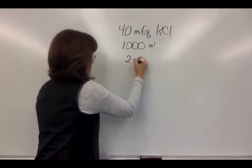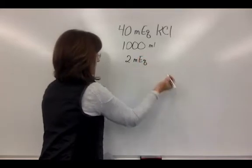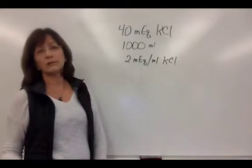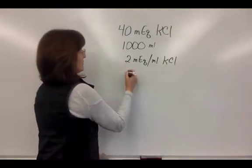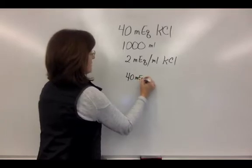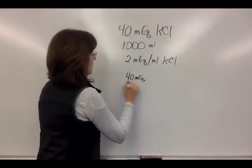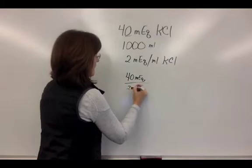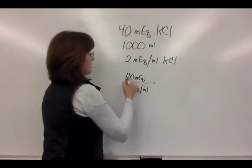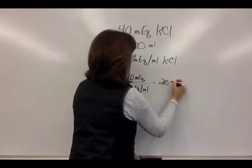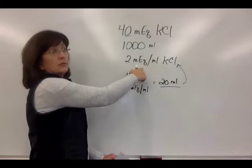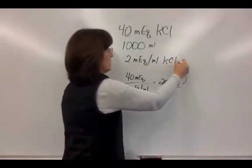Your stock solution is a 2 milliequivalent per mL solution of potassium chloride. This becomes the calculation whereby you divide the total that you want by what you have, and in this case the resulting volume is 20 mLs of your 2 milliequivalent per mL potassium chloride solution added to your one-liter fluid bag.